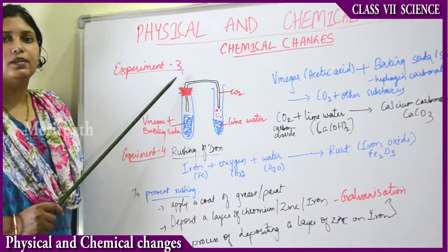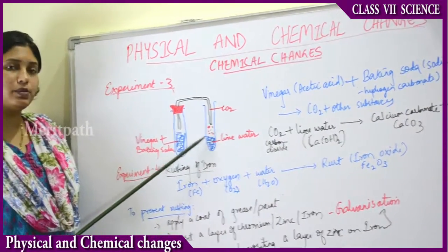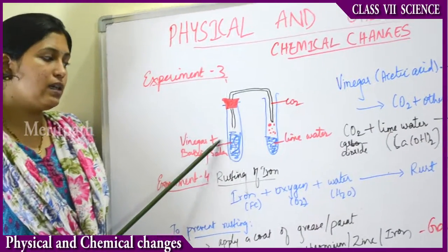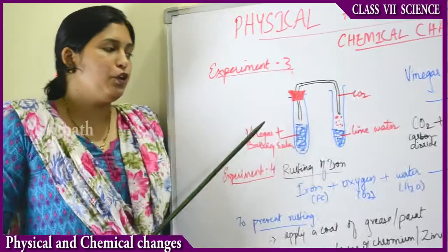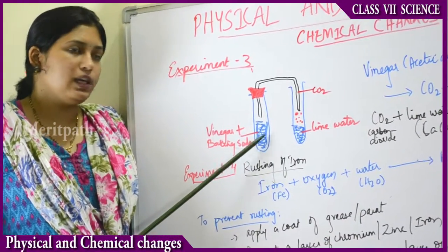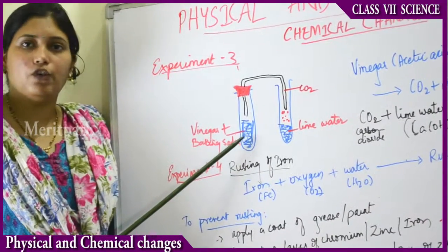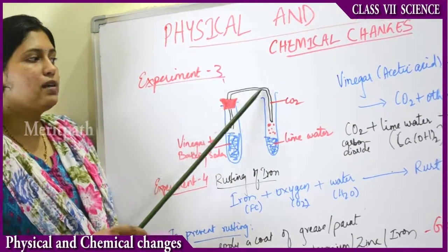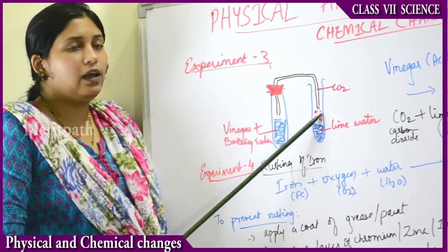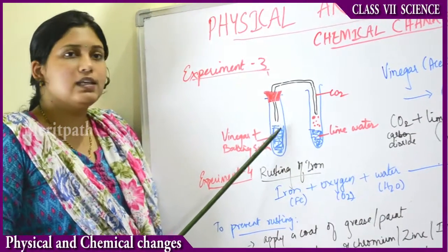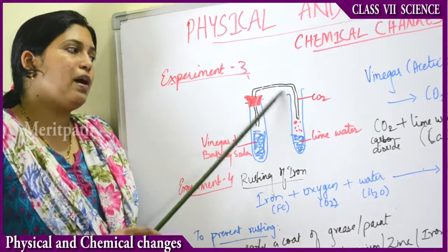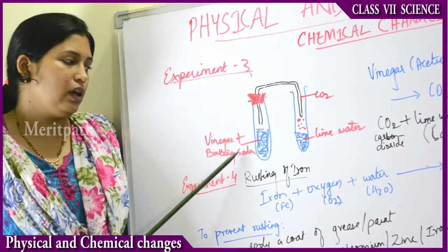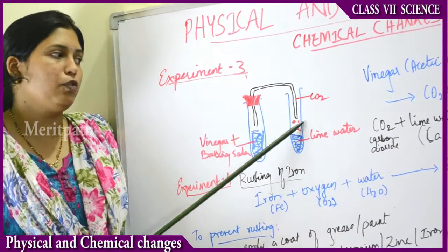Moving on to experiment number 3 for proving chemical change. Take two test tubes. In the first test tube, add a solution of vinegar. Vinegar is nothing but acetic acid, and add baking soda. As you mix vinegar with baking soda, you see small hissing sounds — some bubbles are being formed and some gas is being produced. Pass a tube from this test tube to another test tube containing lime water, so that the gas produced passes into it.